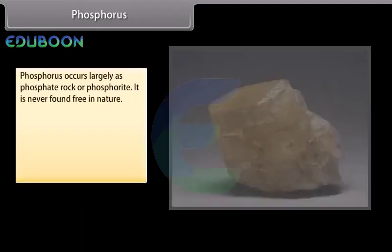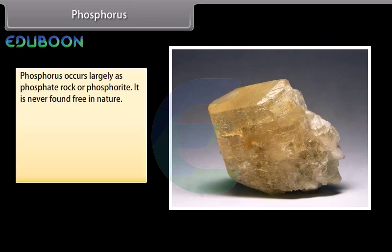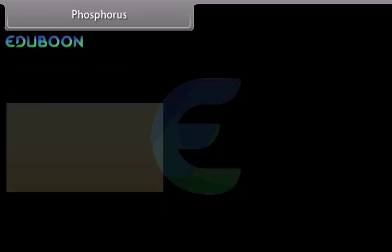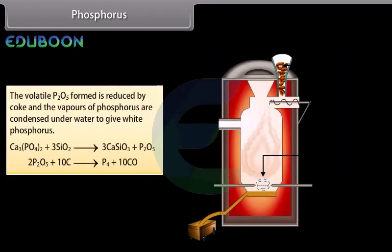Phosphorus occurs largely as phosphate rock or phosphorite and is never found free in nature. Bones have a high percentage of calcium phosphate. The phosphate ore is heated with sand and coke in an electric furnace at 1773 K. The volatile P2O5 formed is reduced by coke, and the vapors of phosphorus are condensed under water to give white phosphorus.